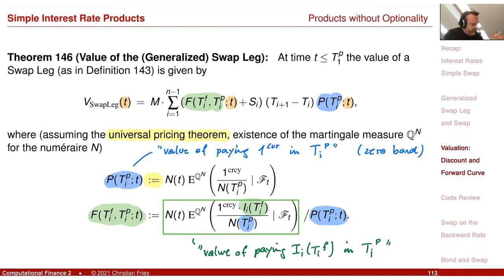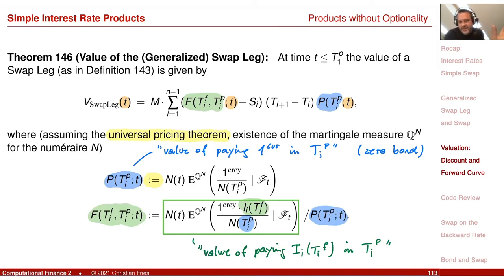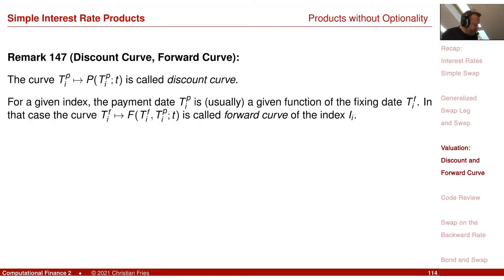With these two objects P and F, you can value all kinds of financial products that pay a linear or affine function of this index, because the expectation operator is linear and you have the two components: the constant part and the linear part. These two objects have a name — they are the so-called discount curve and the forward curve.